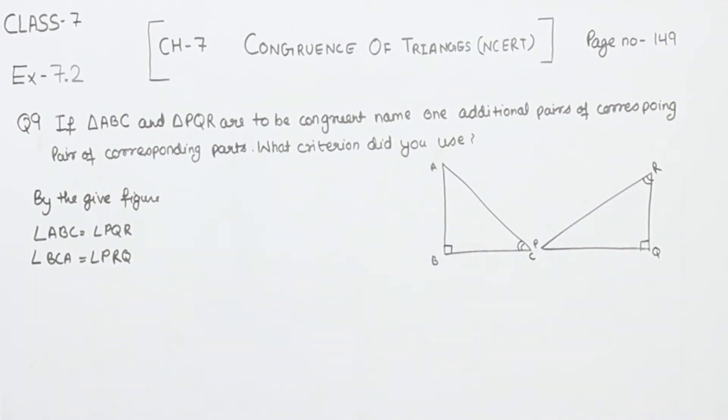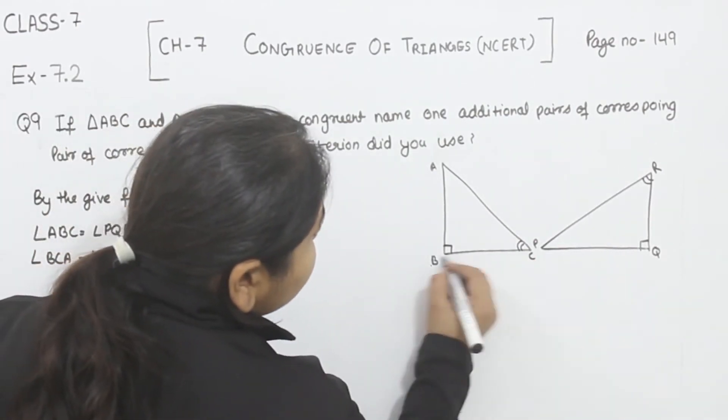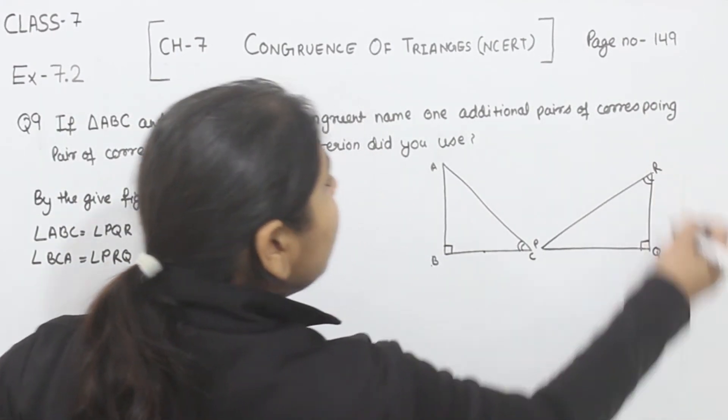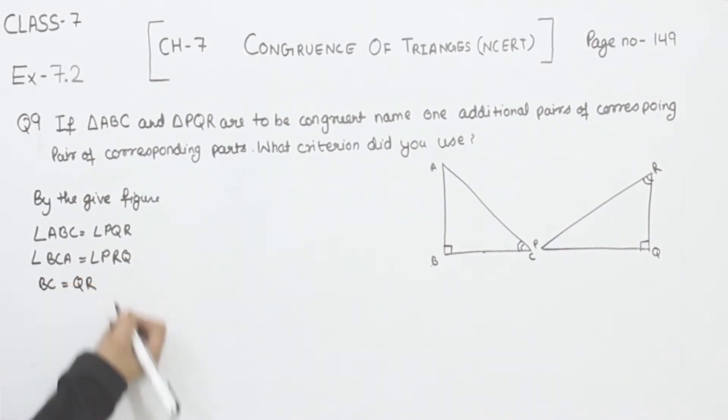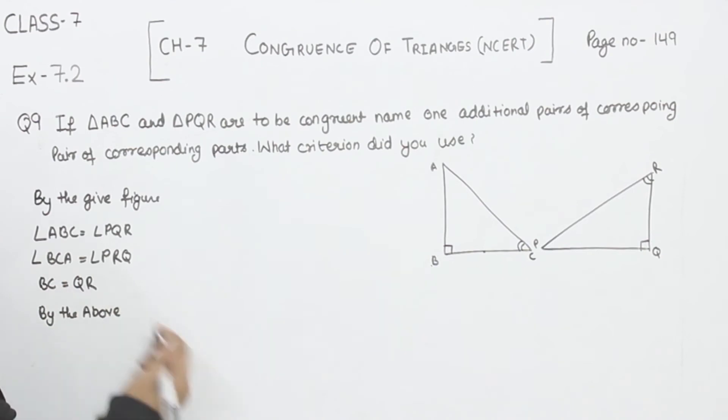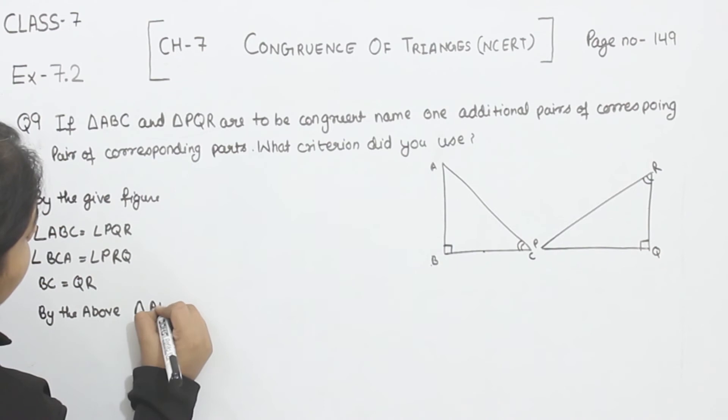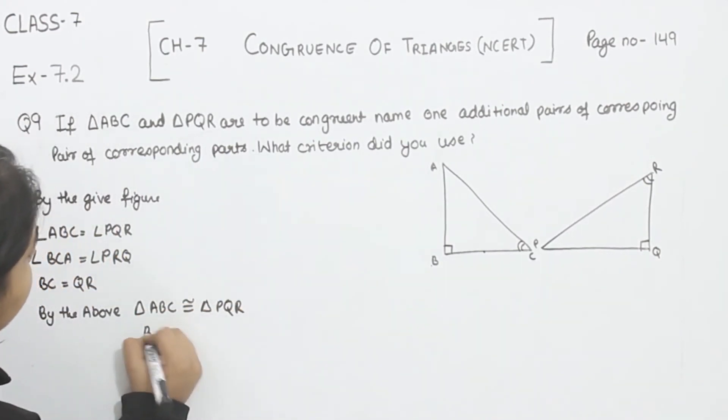So we have to tell the additional part. Now this angle and this angle are on the base BC, and this angle and this angle are on the base QR. So I am going to write here BC is equal to QR.